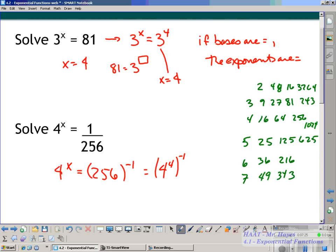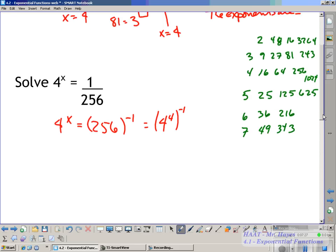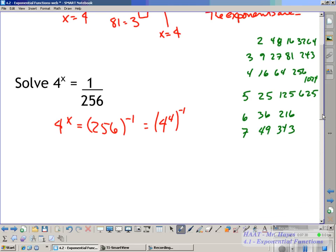So 256, you're like, oh, I remember that. And then you're going to say, oh, that's a 4. Okay, that's 4 to the 4th. So that means that this is going to equal 4. And then you're going to combine these using your power rules. So you get 4 to the negative 4th power. So 4 to the x power is going to equal 4 to the negative 4th power. And then you're going to say x is equal to the negative 4.